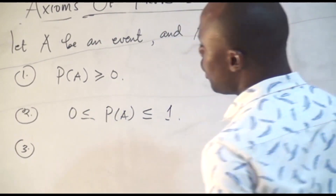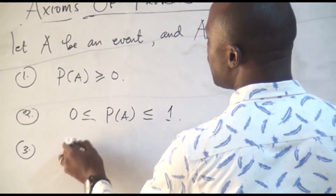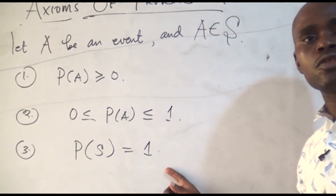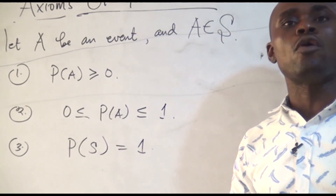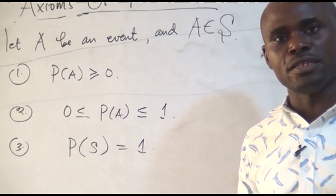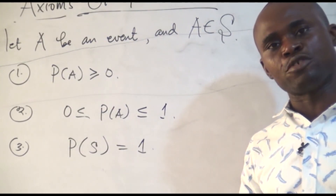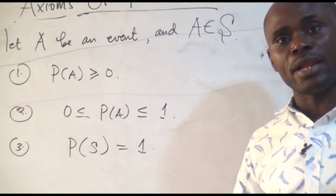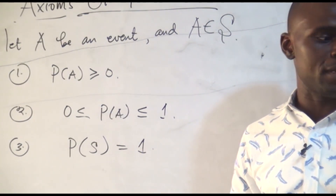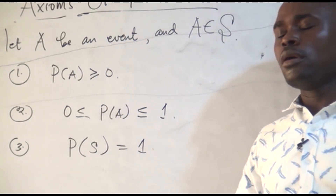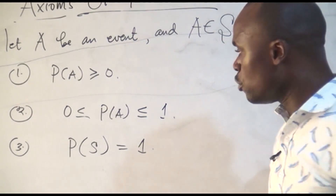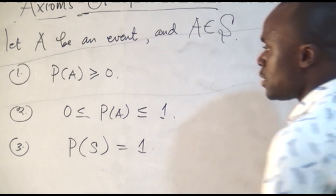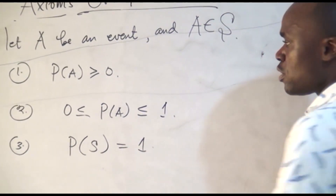Axiom three is that the probability of the sample space is equal to one. By the time you add up or find the probability of all the possible events in a sample space, it is going to give you one. Like the example I gave earlier — it is possible for you to pick any of the balls, either red, yellow, or blue. So the probability of a sample space is always equal to one.